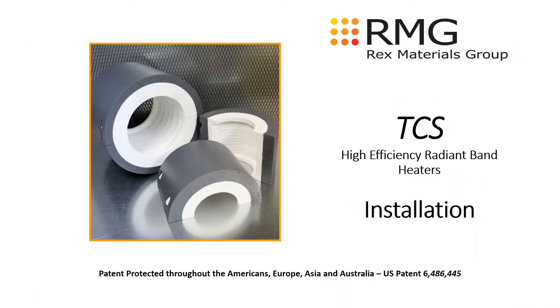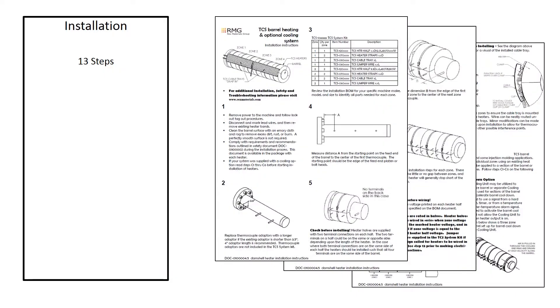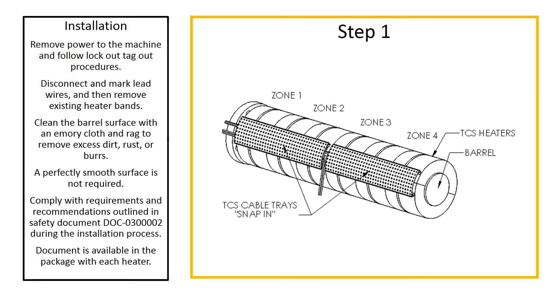Installation of TCS is fairly straightforward. There are 13 steps in the installation process. The first step is removing the traditional band heaters and standard lockout tagout procedures should be followed. The barrel surface should be cleaned but a perfectly smooth surface is not necessary. A safety document detailing safety procedures is also included in the kit.